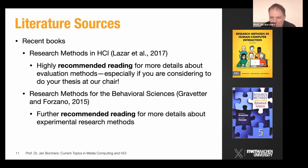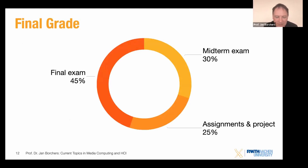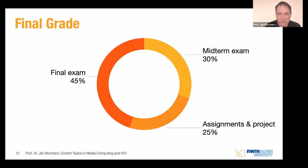So now how is your grade being compiled? We want you to work on this class throughout the semester, and we also want to honor the fact that you do this continuous engagement. So 25% of your grade will come from your assignments and your HCI research project. Another 30% of your grade will come from the midterm exam, which means by the day you walk into the final exam, you actually have more than half of your grade already in your pocket. So if you stick with us, do your work every week, and stay on track, you'll also have an easier time when the final exam rolls around — which is when all the other classes are also having their exams and you're in crunch mode anyway.